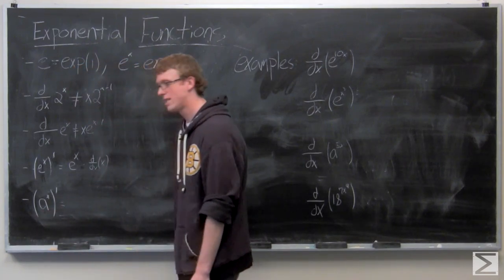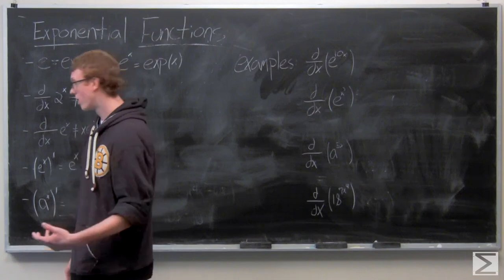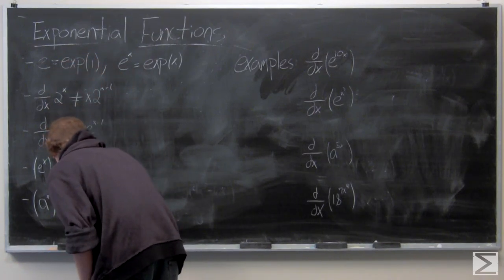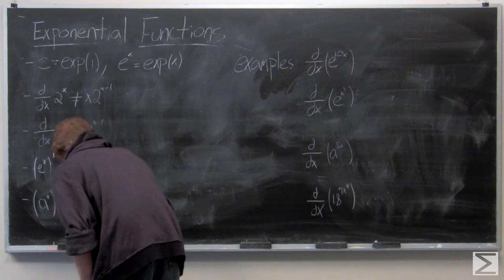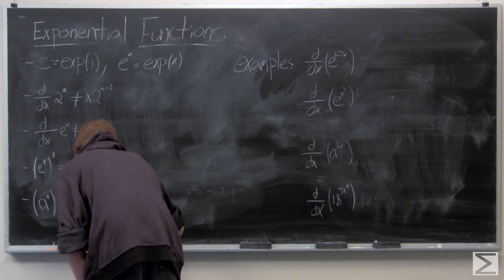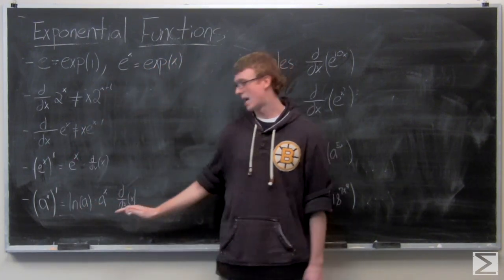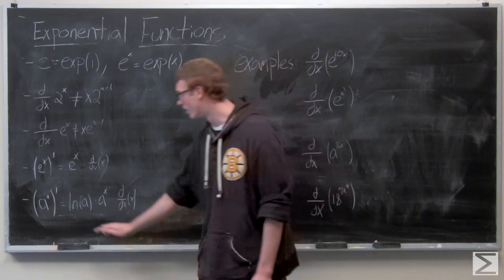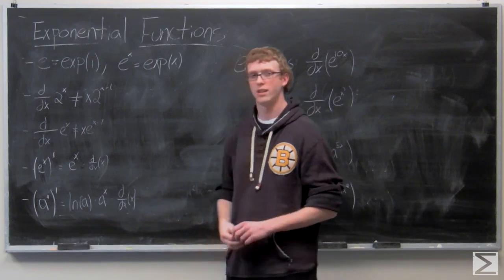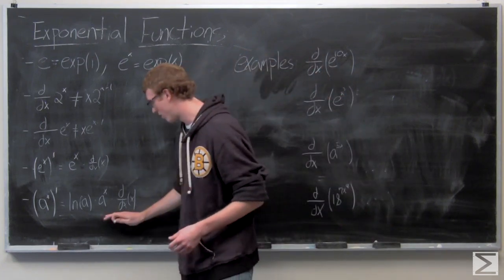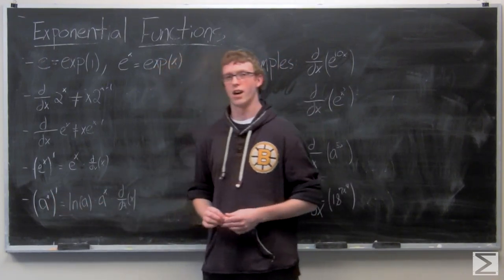So for a to the x, the derivative of that term is going to be natural log of a times a to the x, times the derivative of whatever is in the exponent. Again, that's simply 1 in this case, but using the chain rule you'll have to figure things like that out when we have something other than just x in the exponent.